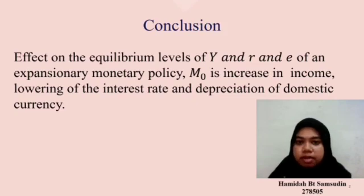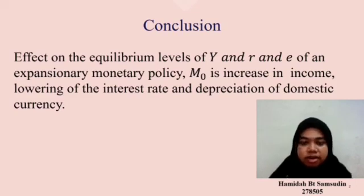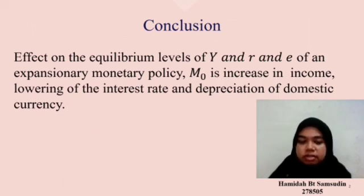We have come to the end of our presentation. From the question above, we can conclude that the effect on the equilibrium levels of Y (income), R (interest rate), and E (exchange rate) of an expansionary monetary policy M subscript 0 is an increase in income, a lowering of the interest rate, and a depreciation of domestic currency. That's all for our presentation today. Thank you.